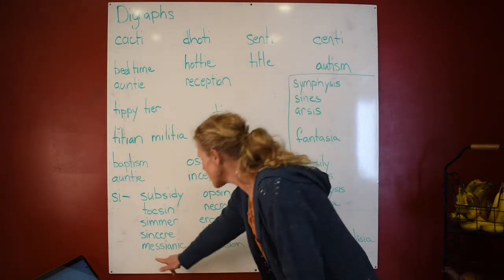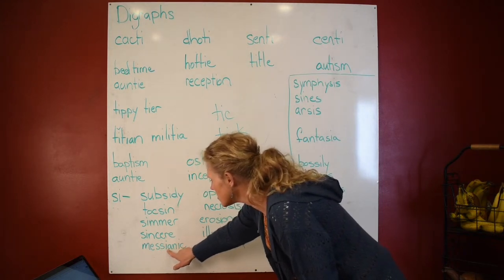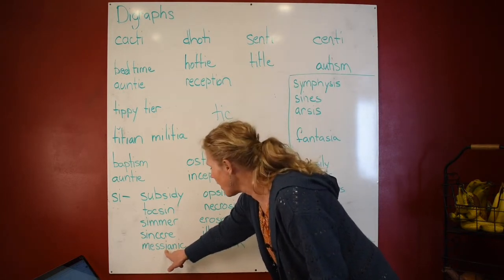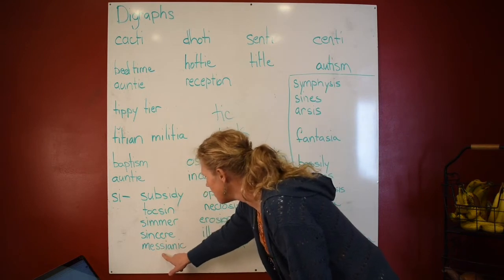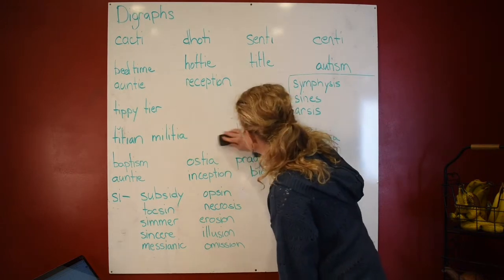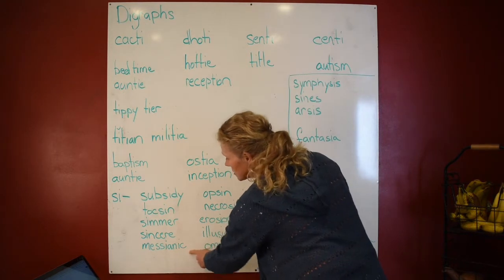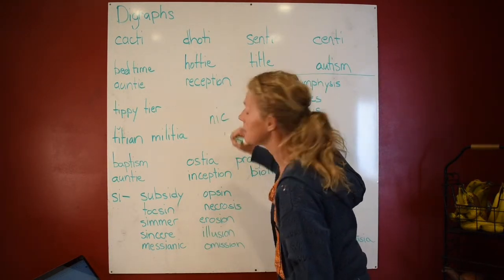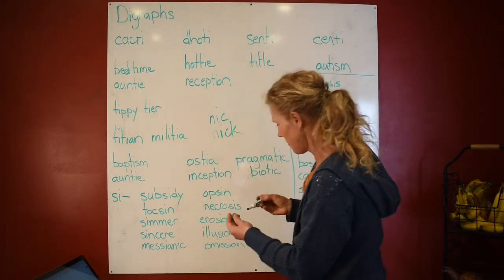Now look at this word — SI is followed by a vowel, but in this word it's following the rule: if you have an I followed by a vowel, it says E. So this says 'messianic.' Same rule here — how would you spell 'nic' at the end of a multi-syllable word? N-I-C. In a one-syllable word: N-I-C-K.